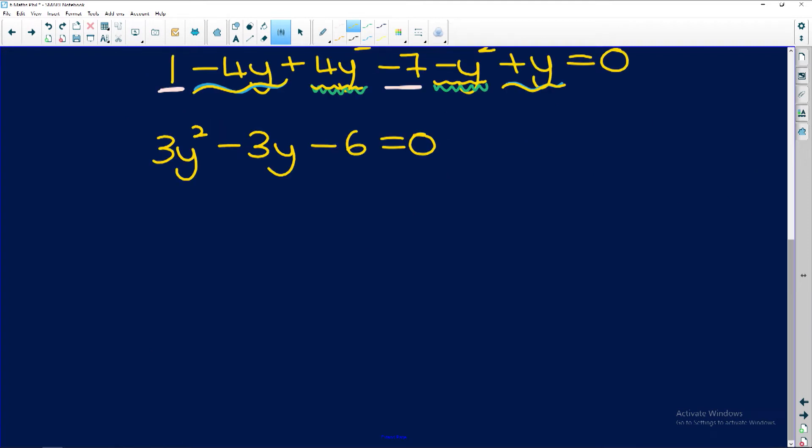So if you guys don't want to factorize this trinomial, you can divide the whole thing by 3. And because of this 0 on the other side, that 3 becomes non-existent. So y squared minus y minus 2 is equal to 0. So now we can easily factorize this. Y minus 2 into y minus 1 equals 0.